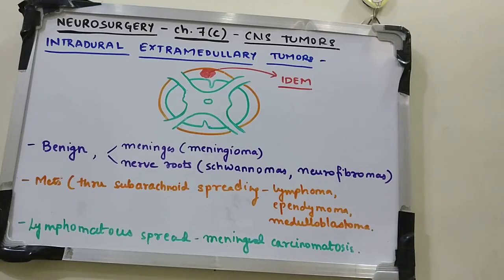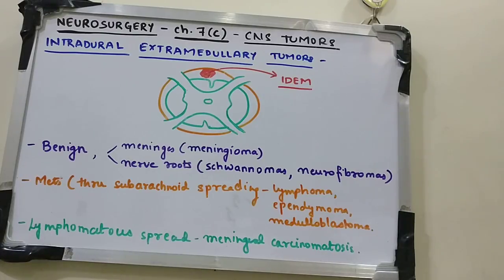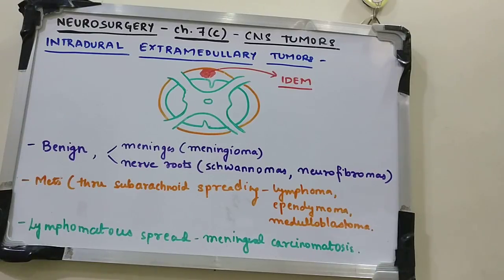Lymphomatous spread into the subarachnoid space may lead to meningeal carcinomatosis, also known as leptomeningeal disease. These are diagnosed through CSF cytology via lumbar puncture and MRI studies.